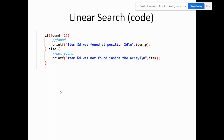After the loop, we handle the output. If found equals one, the search was successful, so we display: item [value] was found at position [p]. If the search is not successful, we print that the item was not found inside the array. That is the linear search algorithm.